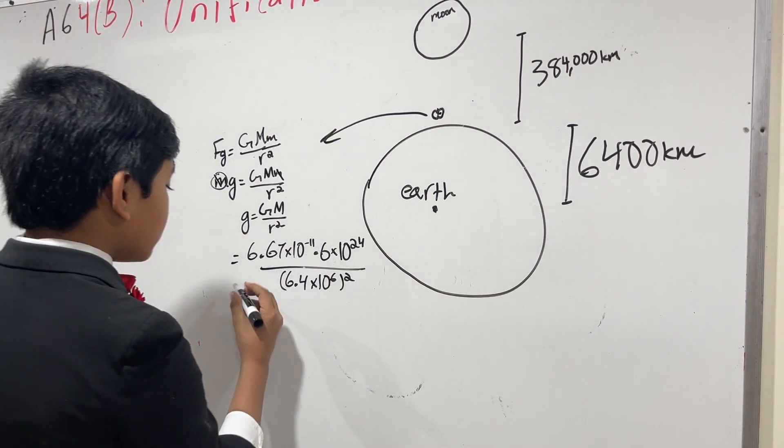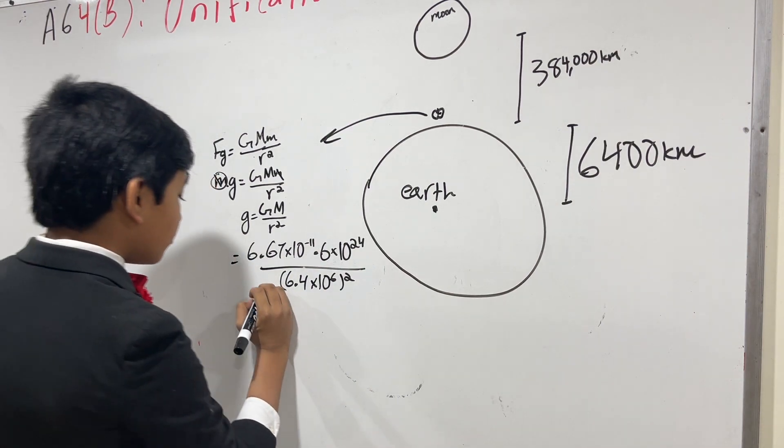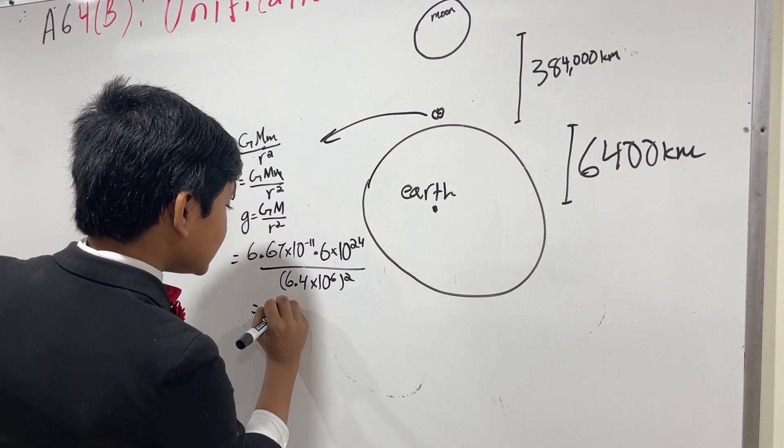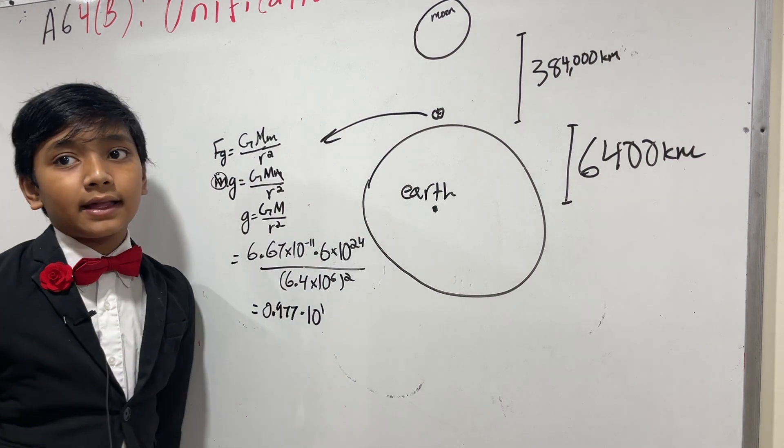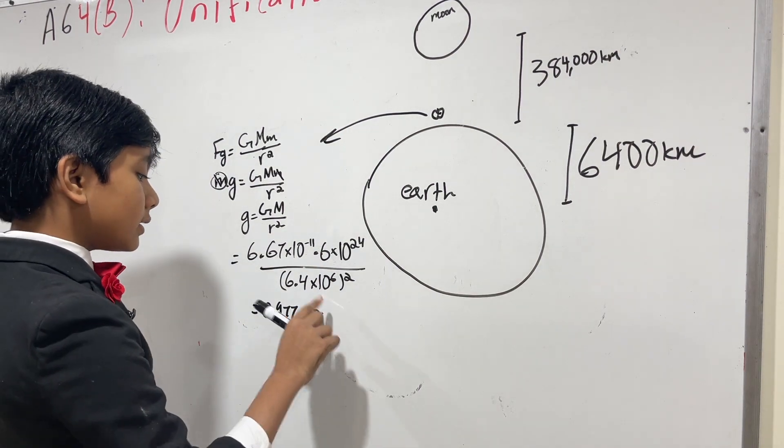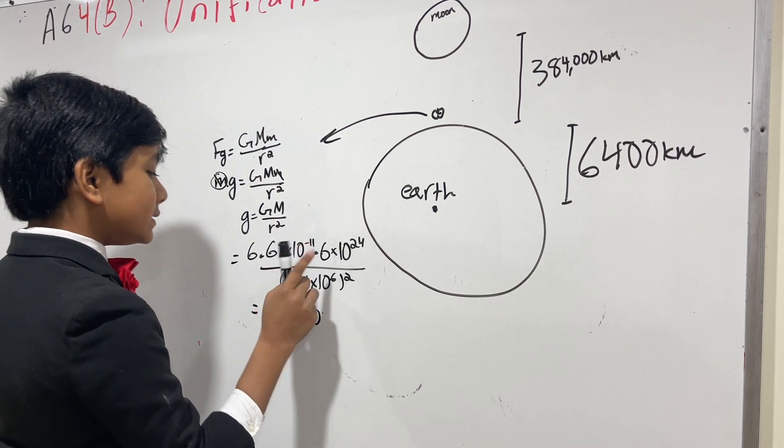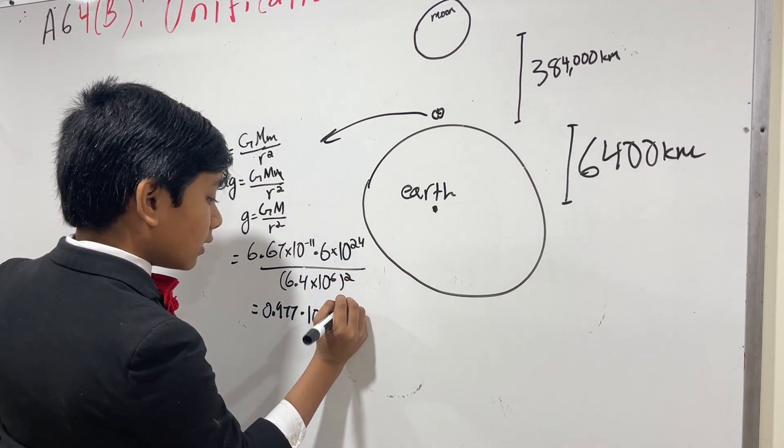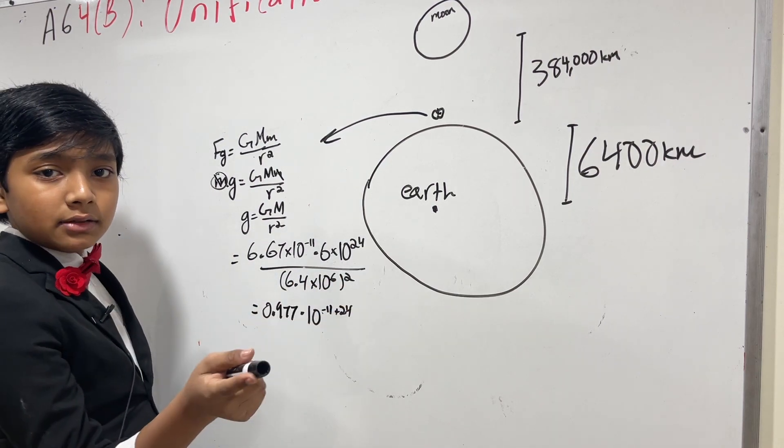So, now, that gives us a total of, what is our g? Well, solving for this gives us 0.977 times 10 to the first power. How do we get to the first power? Well, let's do some exponential analysis, I guess you could call it. This is 10 to the minus 11th. This is 10 to the 24th. And, this is 10 to the 6th. But, we squared it, so that becomes 10 to the 12th.